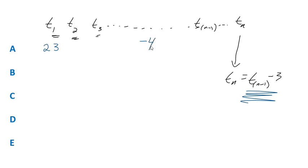They are asking for which item, t sub what, would have a value of negative 4? So maybe I'll write parentheses. Well there are a few ways to solve this.